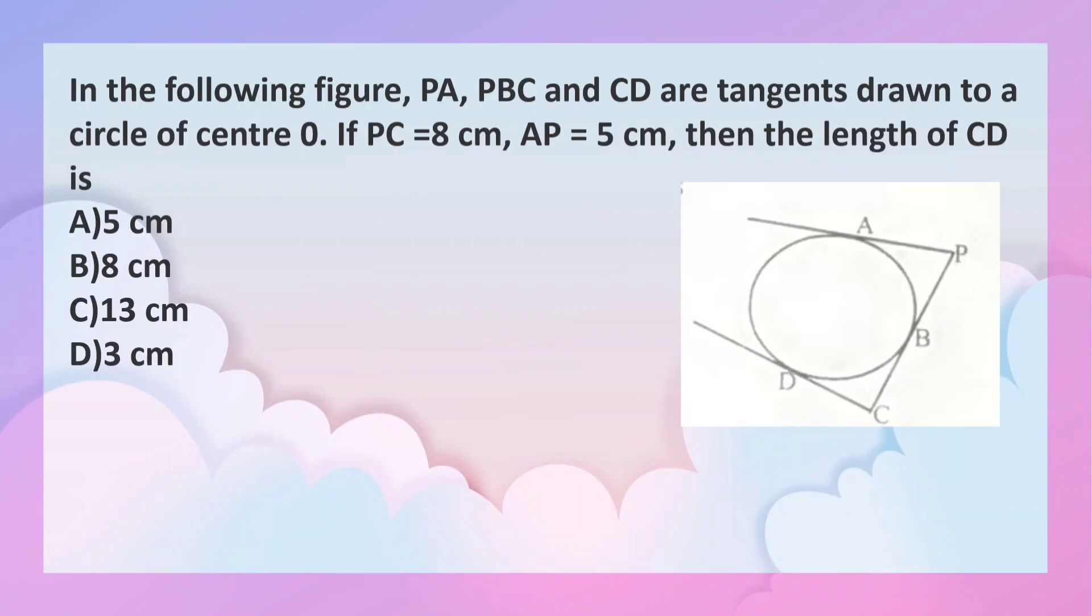In the following figure, PA, PBC, and CD are tangents to a circle of center O. If PC is 8 cm and AP is 5 cm, then find the length of CD.